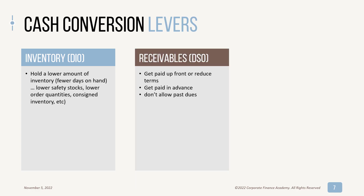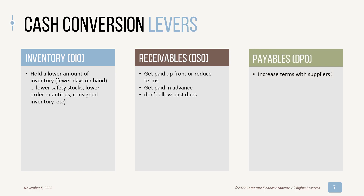For receivables, you can get paid up front, reduce your terms, get paid in advance, and chase past dues hard — don't let customers go past due. And lastly for payables, you can increase your terms with suppliers. Instead of paying them in 30 days, go for 45 or 60 days. In an ideal world, you wouldn't pay your suppliers until you've actually converted your inventory into a sale — and that's negative cash conversion, which we'll mention at the end.